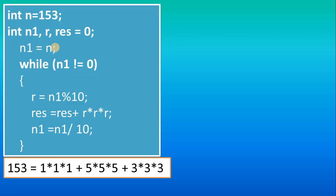Now you understand what exactly an Armstrong number is. This is the program, but how it works and why we have written these statements — we will discuss in this presentation, then we will see the output in Eclipse also. Each time we are doing the calculation in terms of calculating the cube, that's why you observe we have written: res variable equals res plus r cubed.